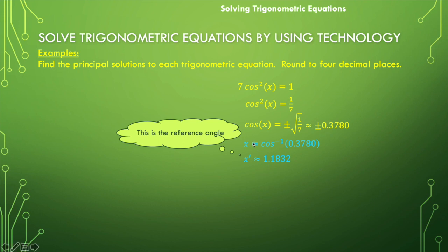And then we would also want to do this process for the negative because this is plus or minus. So let's do the or minus part over here. X is equal to cosine inverse of negative 0.3780. And we would get that value from our calculator, 1.9584. Fantastic.